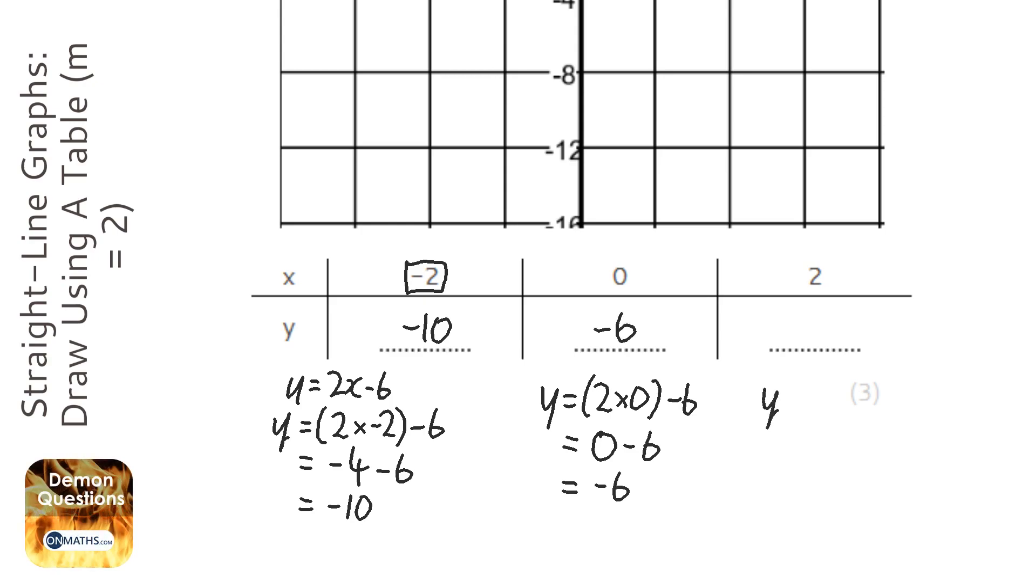Finally, when x is 2, we have y = 2 times 2 minus 6. 2 times 2 is 4. And 4 take away 6—go to 4 on the number line, go left 6—you get -2.